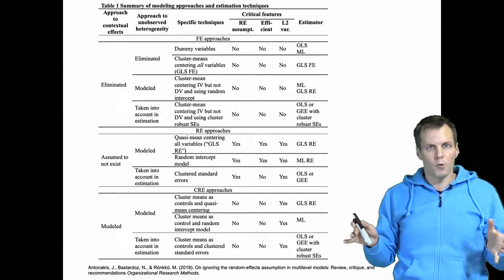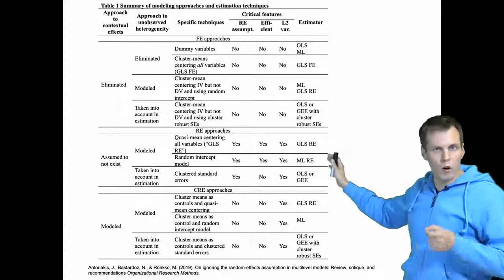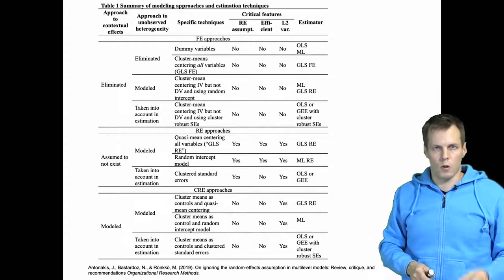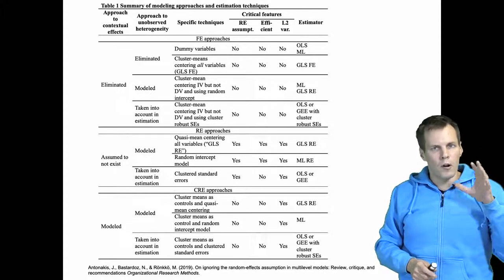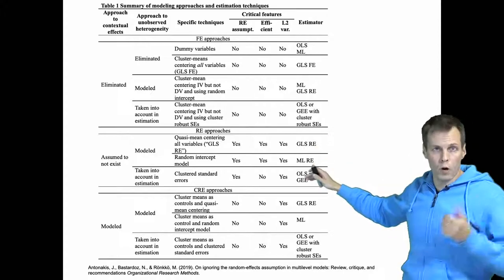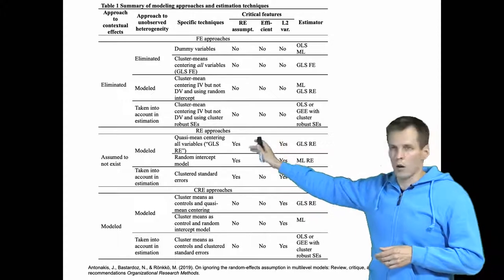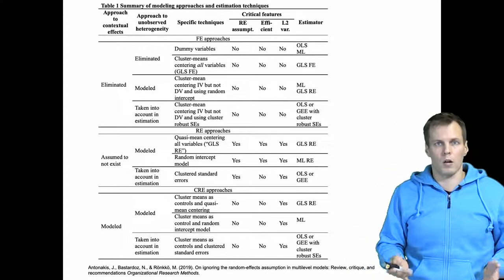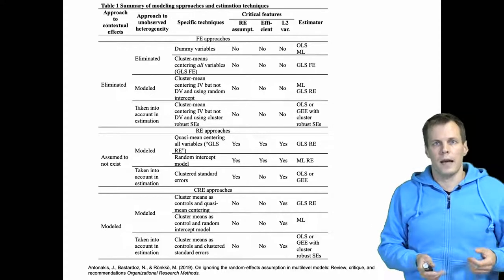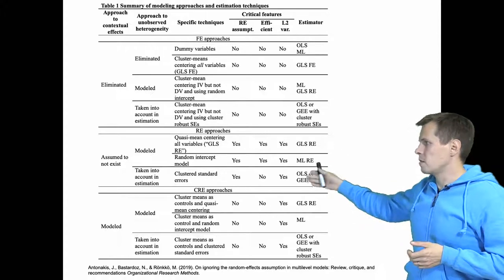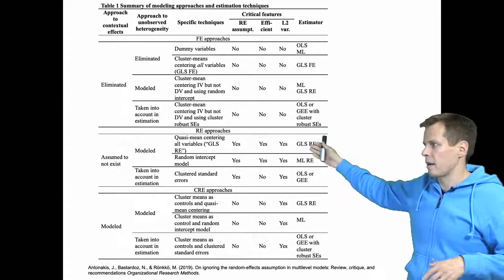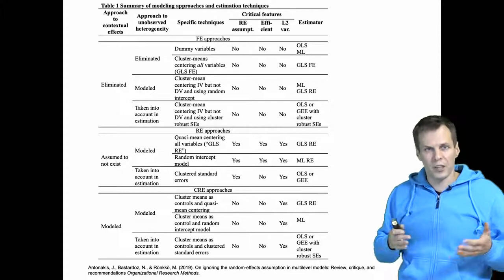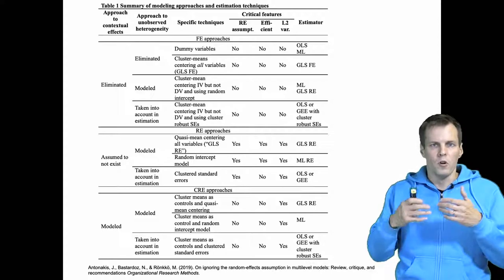Then we have the random effects approaches, which make the assumption that there are no contextual effects — only within effects are allowed in the model, and all between-cluster differences are just products of the within effect working in the clusters. Again, in these techniques you have two categories for handling unobserved heterogeneity. You can model it, in which case you would use the ML maximum likelihood random effects model — the normal multilevel model estimated by, for example, HLM or Stata's mixed command — or you can use the GLS random effects model, OLS, or generalized estimating equations with cluster robust standard errors, since unobserved heterogeneity only biases the standard errors, not the estimates.